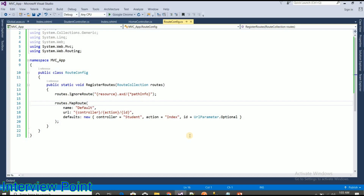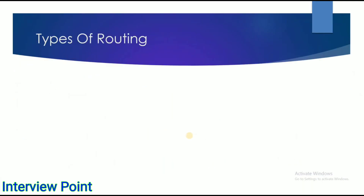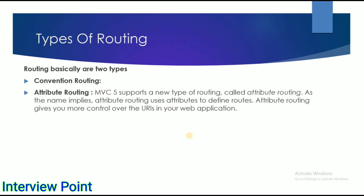The next question is: what are the types of routing? In MVC there are basically two types. The first one is convention-based routing and the second one is attribute-based routing. I have been talking about convention-based routing so far, and now I am going to talk about attribute-based routing.